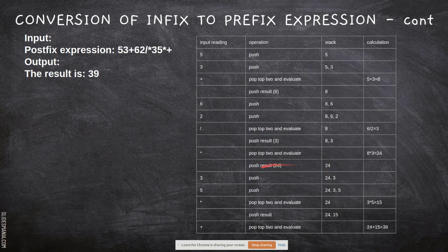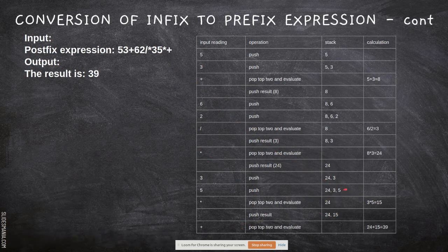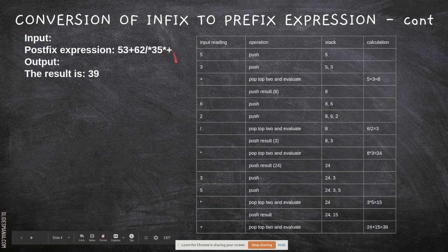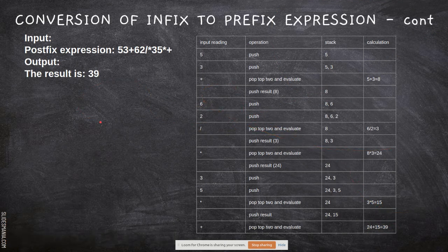The next character is *, so pop the top two elements — 8 and 3 — and compute: 8 × 3 = 24. Push 24 back onto the stack. Then push 3, then push 5. The next operator is *, so pop 3 and 5: 3 × 5 = 15. Push 15. The final operator is +, so pop 24 and 15: 24 + 15 = 39. The result is 39.